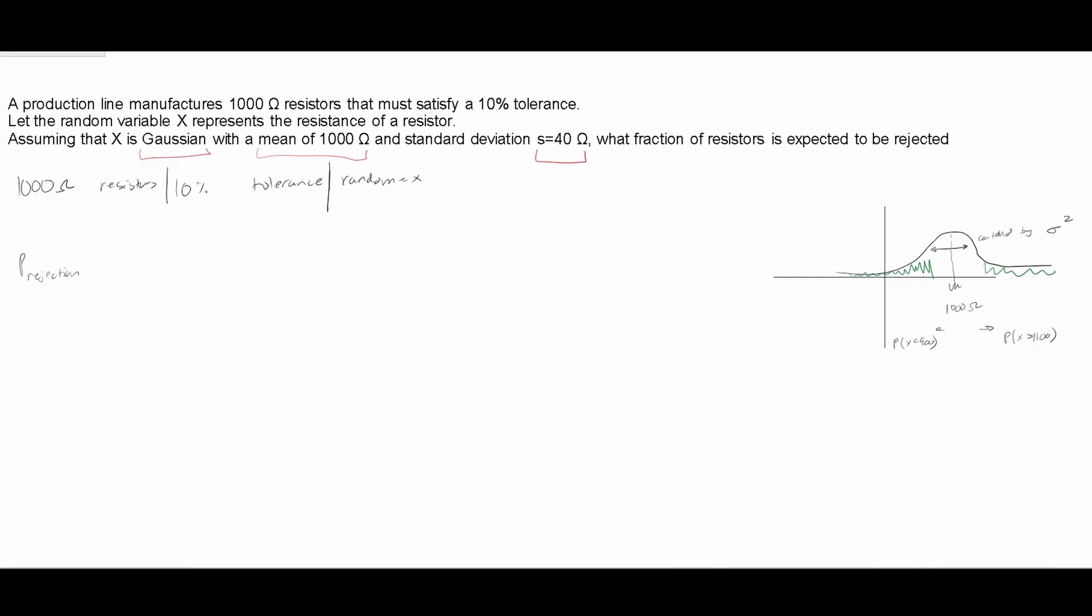So pick whatever side you feel comfortable with. For me, I'm just going to do the P rejection for the 1,100 side. So I'm going to set this equal to the probability of X being greater than or equal to 1,100.